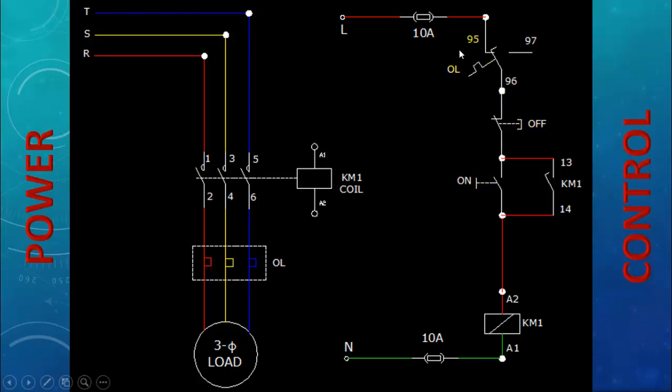So let us talk about the control diagram of this contactor. If you need to energize the contactor, what you need to do is that if your overload is not tripped, the phase will appear at 96 terminal. And since the off push button is closed, it will now appear at the incoming side of the on push button. Now you need to press the on push button in order to energize KM1 coil of the contactor, because the other side of the coil is already connected with the neutral.